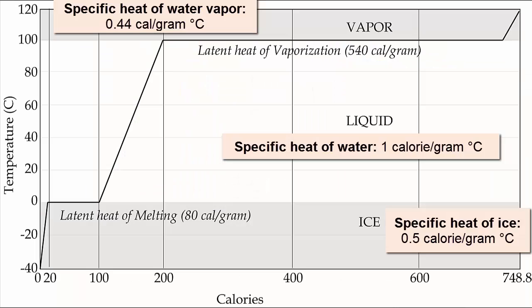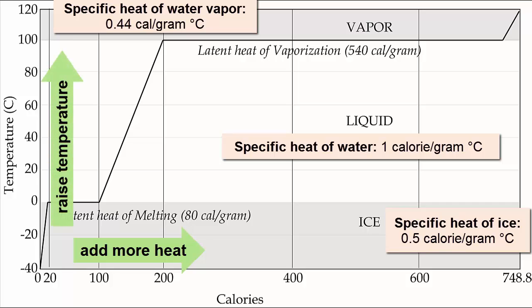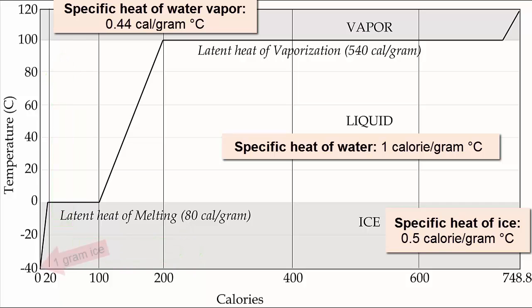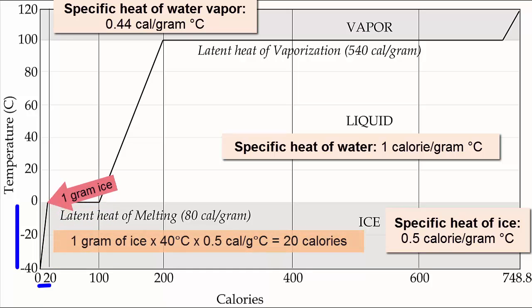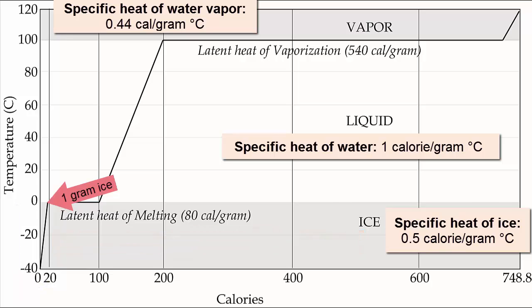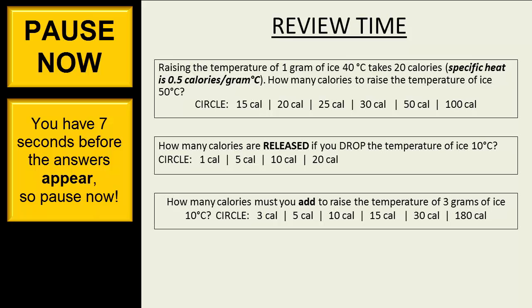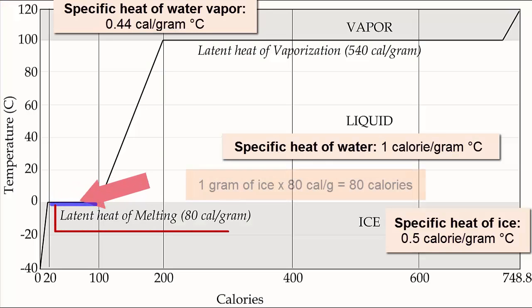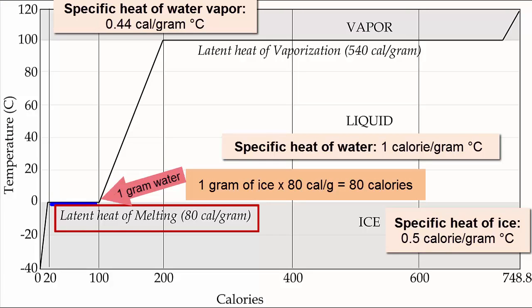Here's another way to show what happens when ice melts. The x-axis shows increasing addition of calories and the y-axis shows increasing temperature. Starting with one gram of ice at minus 40 degrees Celsius, by adding 20 calories of heat we raise the temperature of ice to its melting point — the specific heat of ice is 0.5 calories per gram degree Celsius. At the melting point, we add 80 calories of heat to break the bonds and melt it.